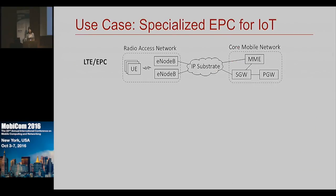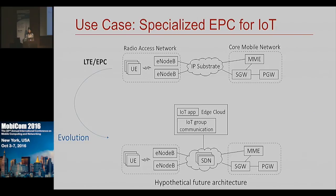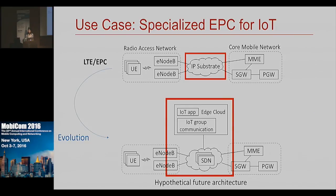Finally, the last use case is a specialized architecture for IoT devices — a hypothetical future architecture. Again, we have SDN and an edge cloud with some architectural components located within the cloud to handle signaling traffic coming in for IoT devices, since they will potentially be very large in number. There might also be some modifications to the eNodeB.